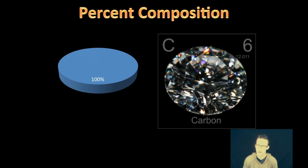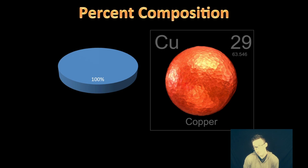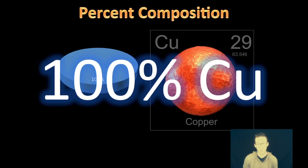So let's first talk about some elements. Elements made out of one type of atom, for example, carbon. It's 100% carbon. Let's take a look at copper, another element, 100% copper, because it's just one type of atom.